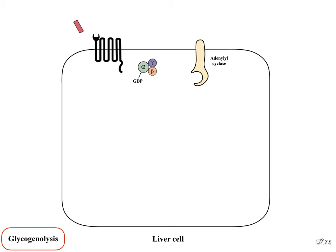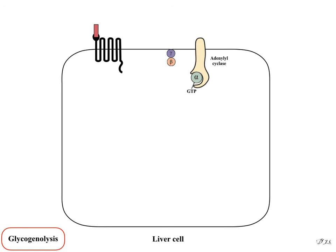Glucagon acts on G-protein-coupled receptors, which have 7 transmembrane segments that loop in and out of the cell membrane. When glucagon attaches to the receptor, it undergoes a conformational change causing the GDP-bound trimeric G protein to associate with the cytoplasmic part of the receptor and exchange GDP for guanosine triphosphate (GTP). Displacement of GDP by GTP causes the alpha subunit to dissociate from the trimeric complex and associate with adenylyl cyclase, which converts ATP to cyclic AMP.